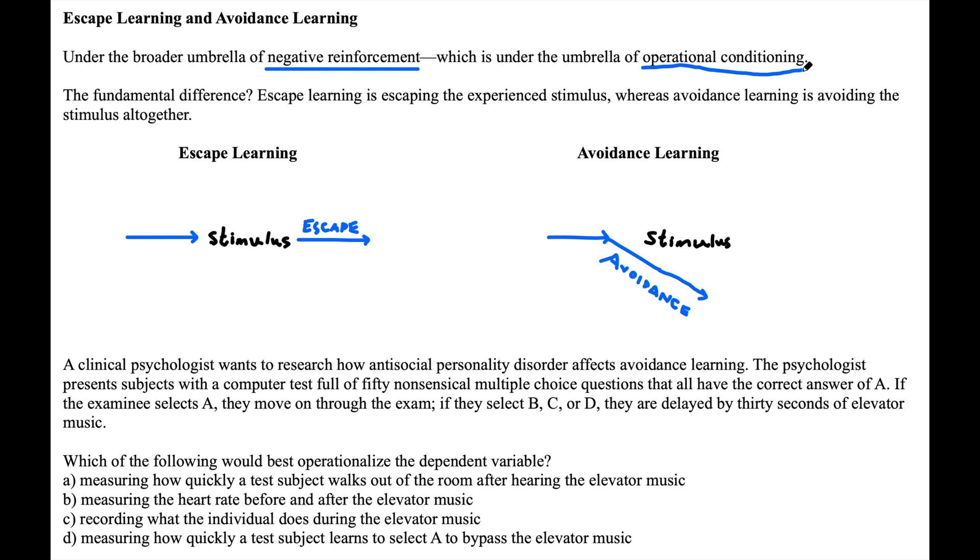So the big differentiator between the two, even though they sound very similar, is that in escape learning, you've actually experienced that aversive stimulus and you have to escape it. Whereas avoidance learning is making sure we learn a behavior to avoid that aversive stimulus in the first place.